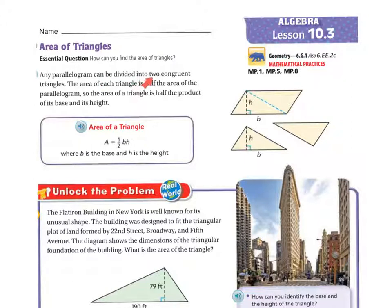Any parallelogram can be divided into two congruent triangles. That means equal triangles. The area of each triangle is half of the area of the parallelogram. So the area of a triangle is half the product of its base and its height.